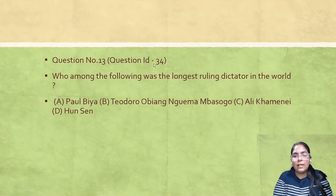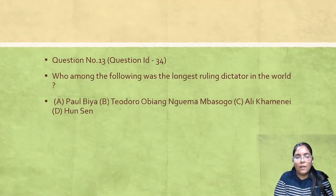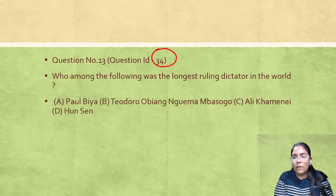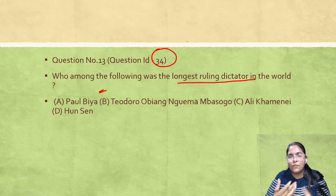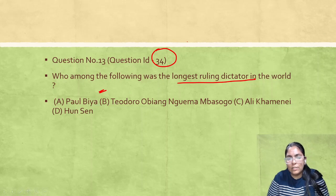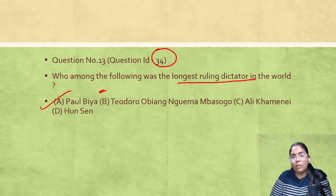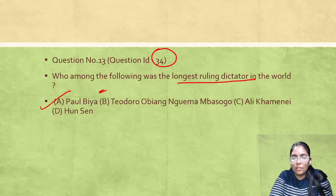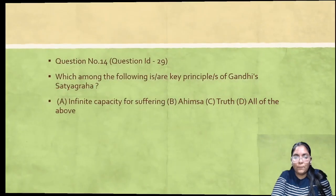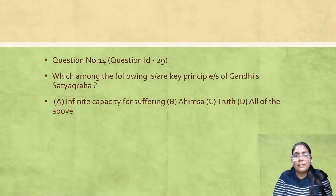Moving on to question ID 34: Who among the following was the longest-ruling dictator in the world? This is a very different kind of question included in the entrance. The answer is Paul Biya — he was the world's longest-ruling dictator.